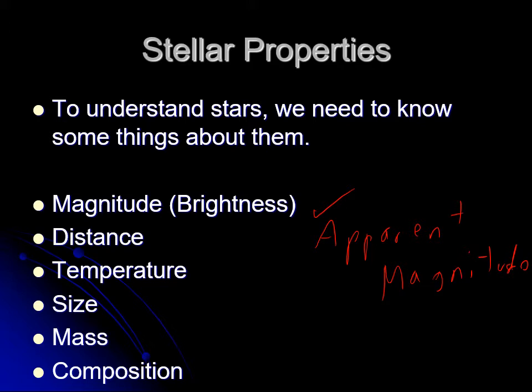The next step is we want to measure the distance to a star. How do you measure the distance to a star? If you want to measure across your computer screen, you use a ruler or tape measure. If you want to know how wide a room is, you use a tape measure. If you want to figure out how far it is from where you live to downtown Houston, you can drive there and use the odometer of your car.